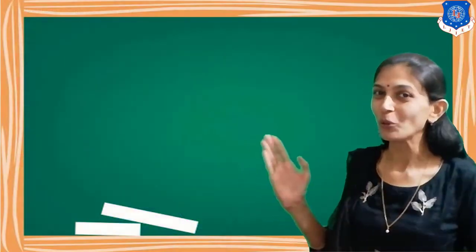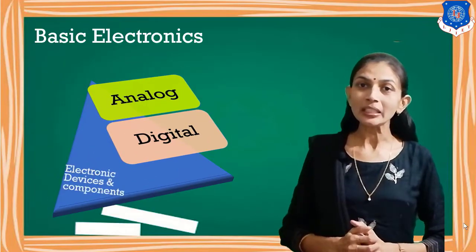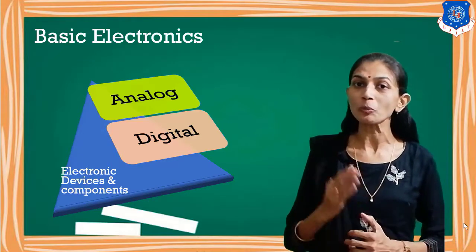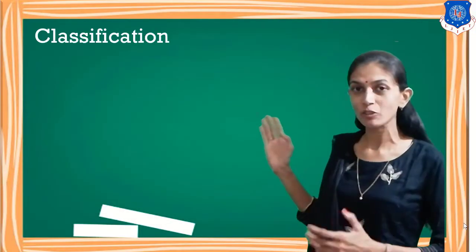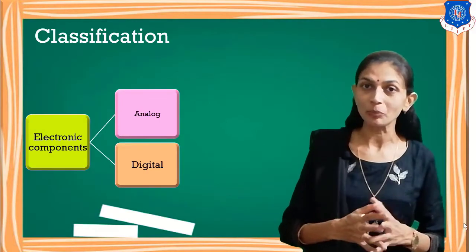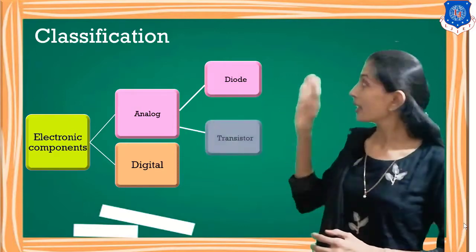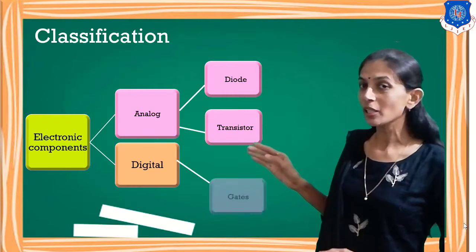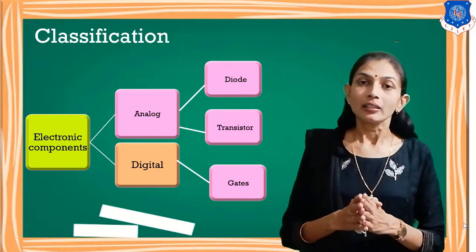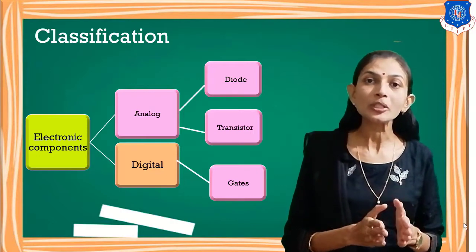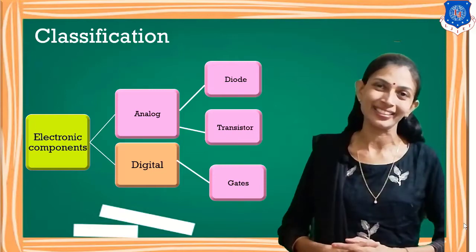First of all, we will learn this subject initially from the classification. Electronics devices and components are primarily classified into two main categories: one analog and second digital. Analog and digital components will be further classified into three main examples or components. Analog components include diode and transistors, and under digital components we will study gates in detail. Diode and transistor are examples of analog components, and in the category of digital components, we will study the gates and their applications in detail.